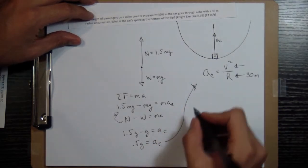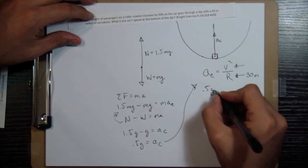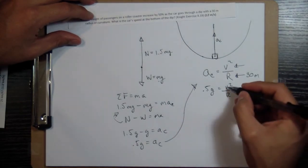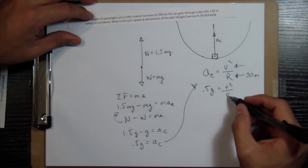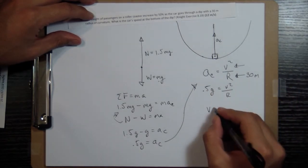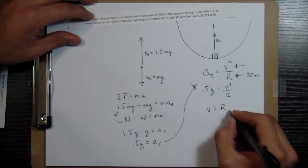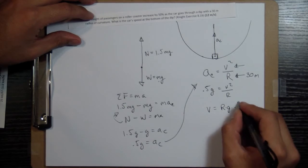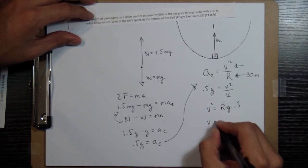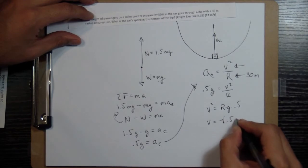So we can use this in our equation over here. And we want to get V. And now we know what R is. We know what g is. So we'll be able to actually use numbers for this. So V is equal to R times g times 0.5. Sorry, V squared is equal to that. So V is going to be equal to the square root of all of this.